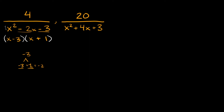Now we do the same thing and factor the second denominator. Again, leading coefficient of one, so we factor it into two sets of parentheses with an x in each. The last number is positive 3, and the middle number is positive 4. What two numbers multiply to 3 and add to 4? That's 3 and 1, because 3 times 1 is 3 and 3 plus 1 is 4. So that factors into (x plus 3)(x plus 1).